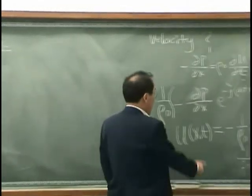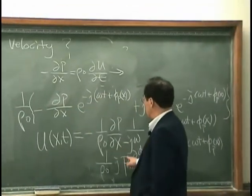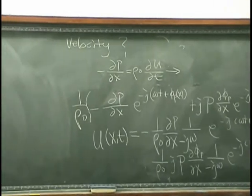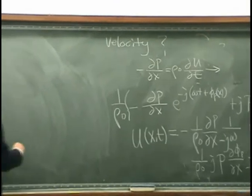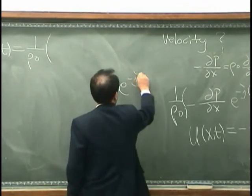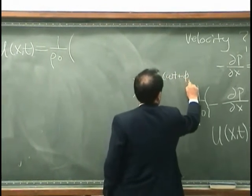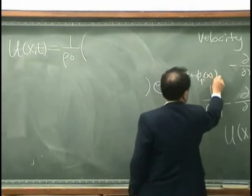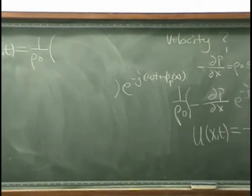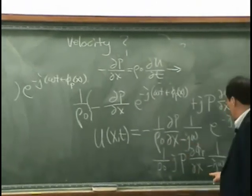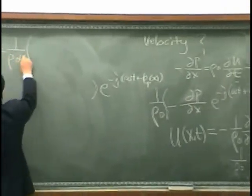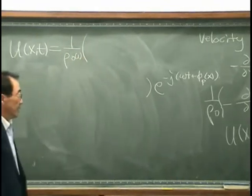Okay, first term I have minus, the common thing, rho zero. And we have exponential minus j omega t plus phi px. And the first term is dp/dx minus j omega, here j omega, so I got omega over here.